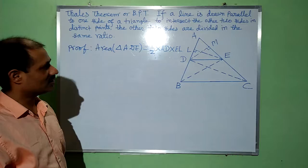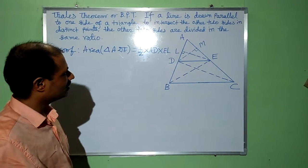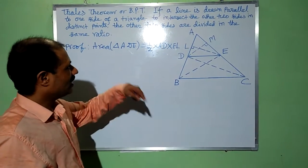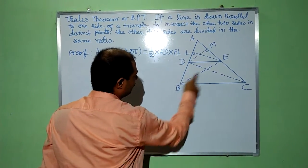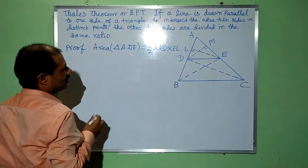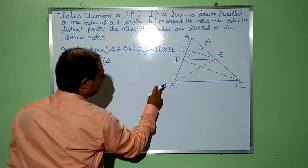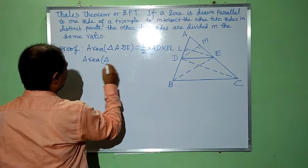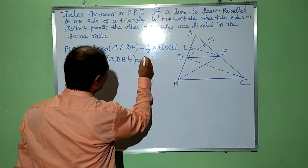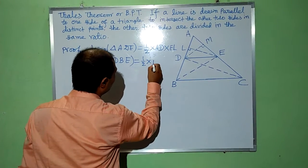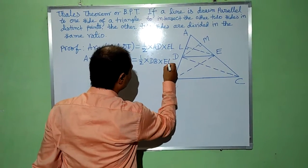Now we have to find area of triangle DBE. Triangle DBE is an obtuse triangle in which its perpendicular will lie in the exterior of this triangle. The perpendicular is the same EL. So area of triangle DBE is equal to half into base DB into height EL.